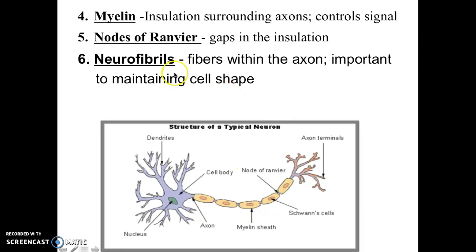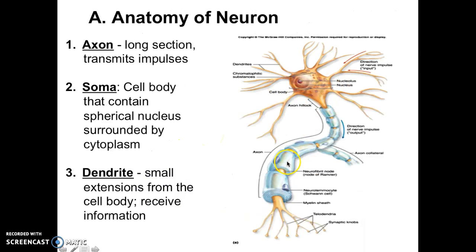The neurofibrils are the fibers within the axon. If you took your neuron and cut it in half and looked at it, that would be your neurofibril — it kind of holds the structure. In this picture, the myelin sheath is the insulation around the axon, and the spaces in between it would be the nodes of Ranvier.